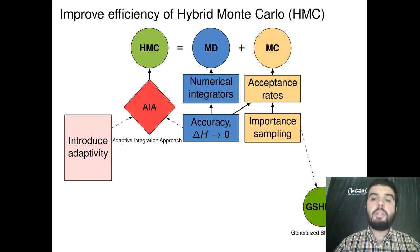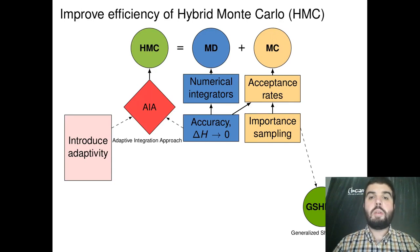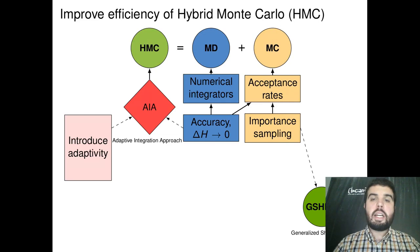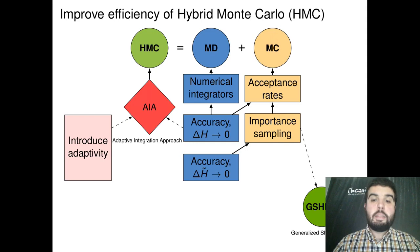We have also worked in importance sampling, which is a well-known technique where one samples with respect to a different distribution, which is easier to sample from, and then recovers the desired distribution. We have mainly worked with the Generalized Shadow Hybrid Monte Carlo, or GSHMC, and our importance distribution was the modified or shadow Hamiltonian.